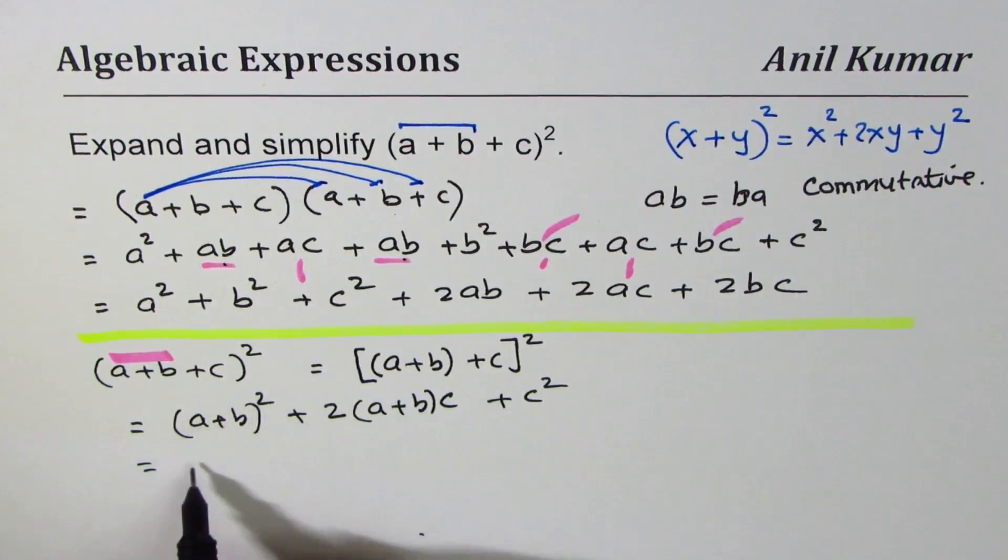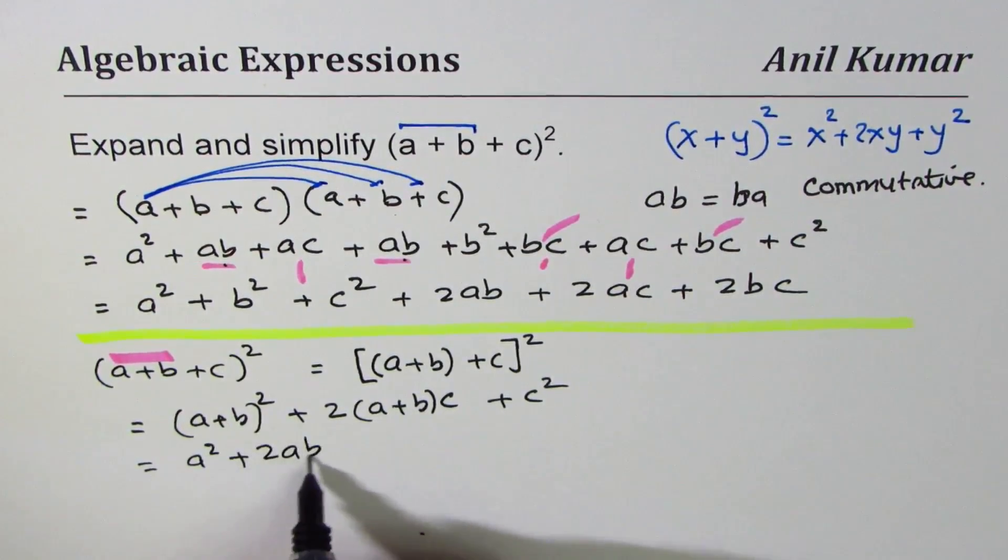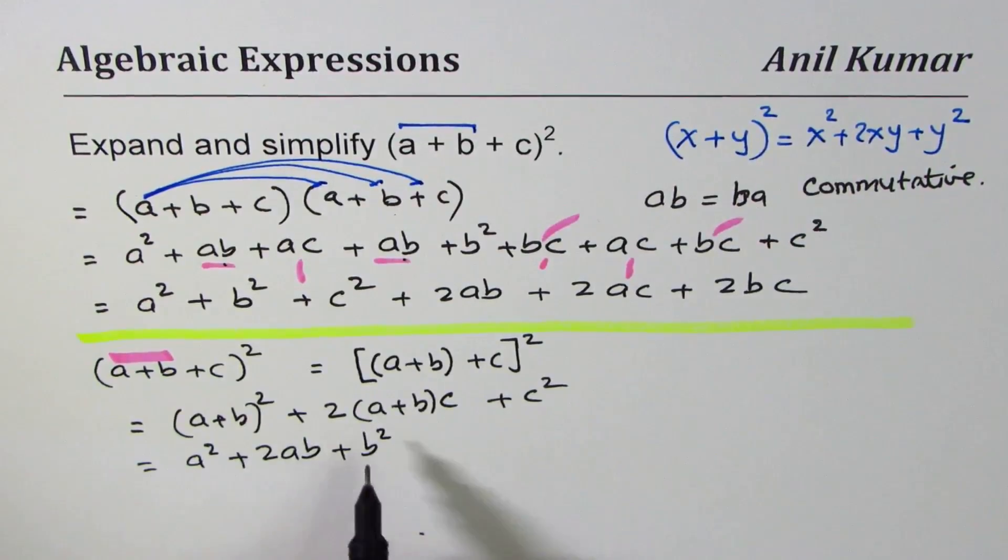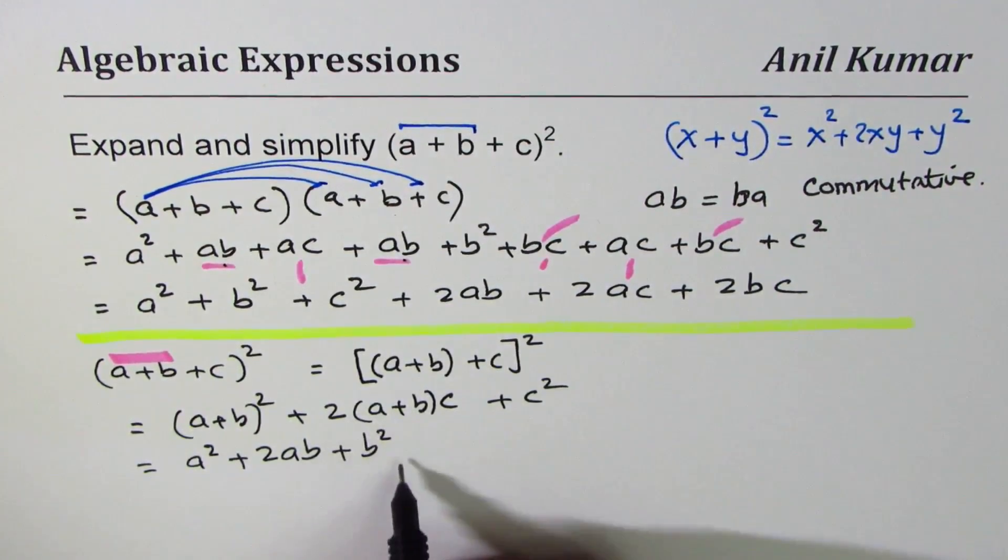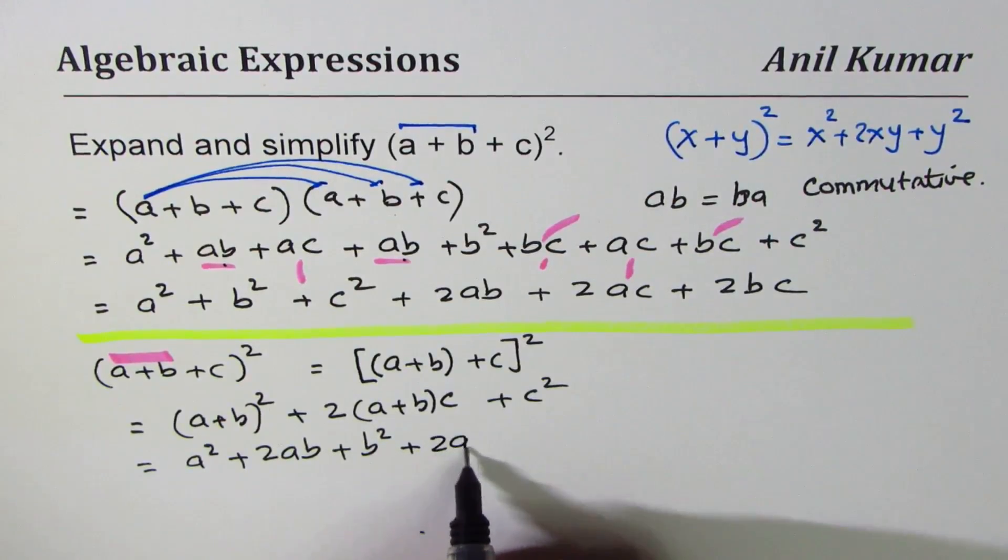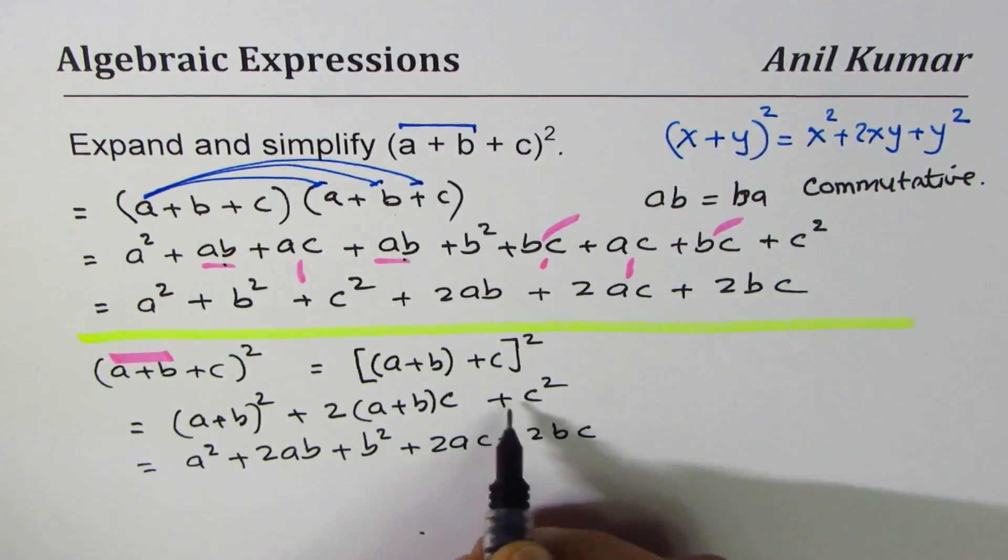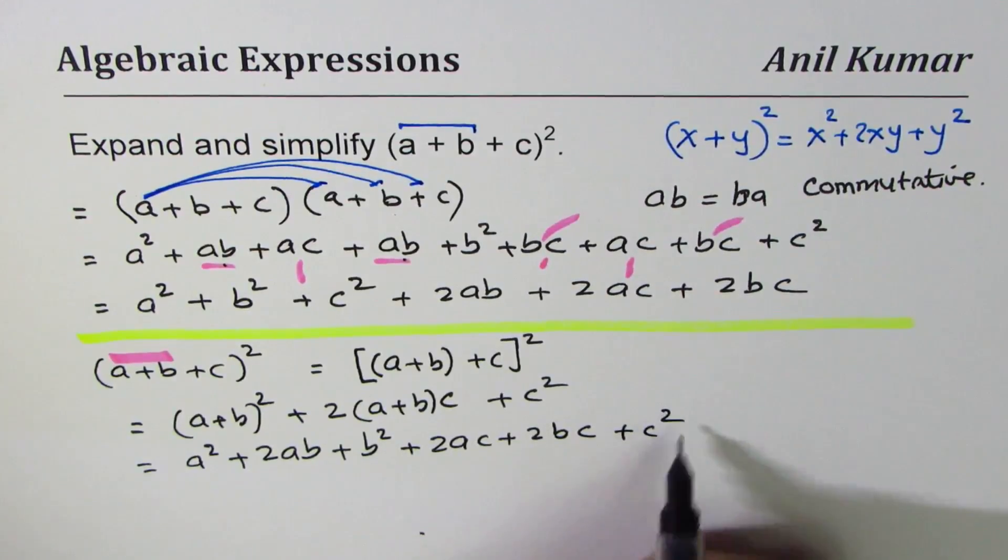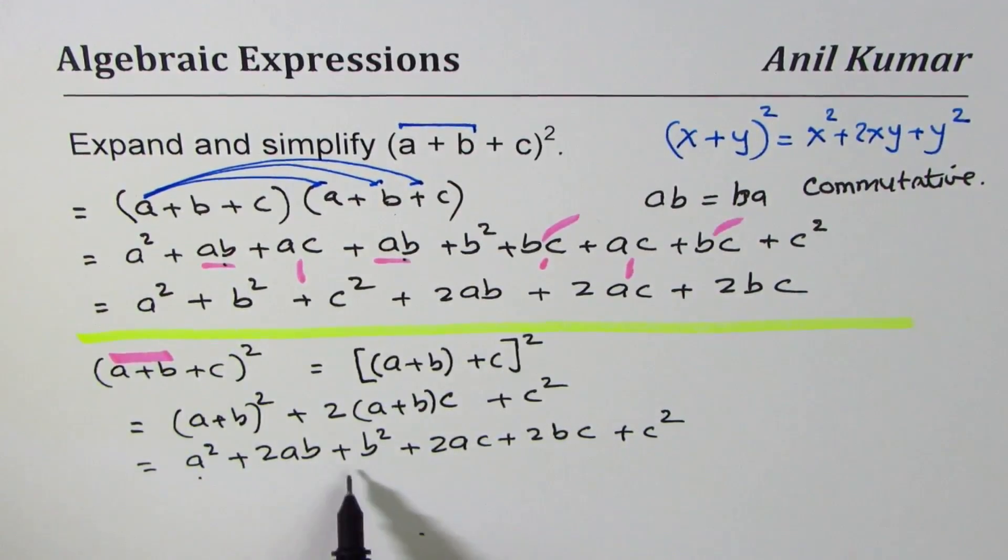Now we again have (a + b)² which I could expand, so I get a² + 2ab + b². Let me expand these terms: 2c times a, b, so we get 2ac + 2bc, and here we get plus c².